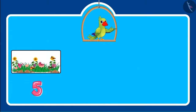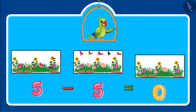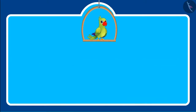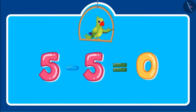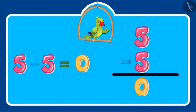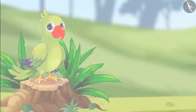Children, did you see that if we subtract five from five, then zero is left? Now let us write this also in a systematic way: five minus five equals zero.